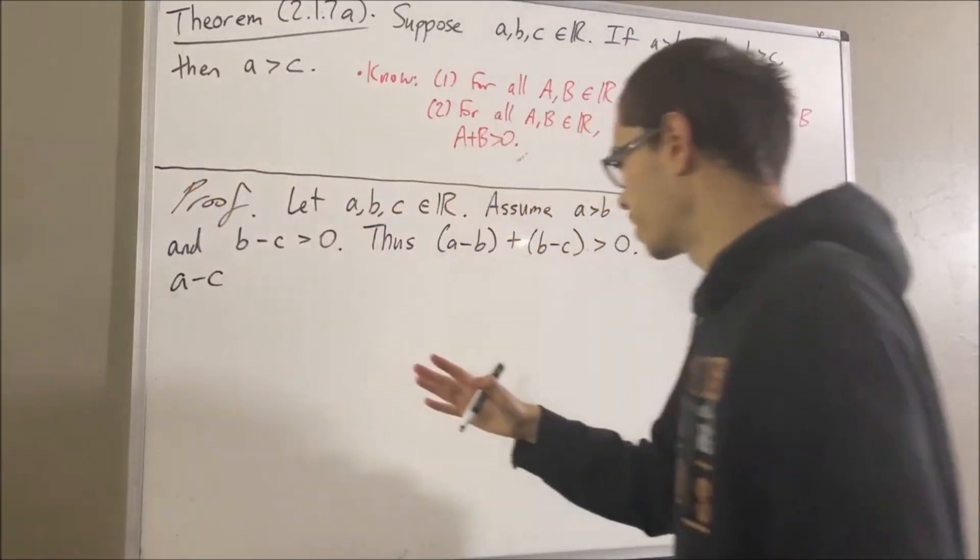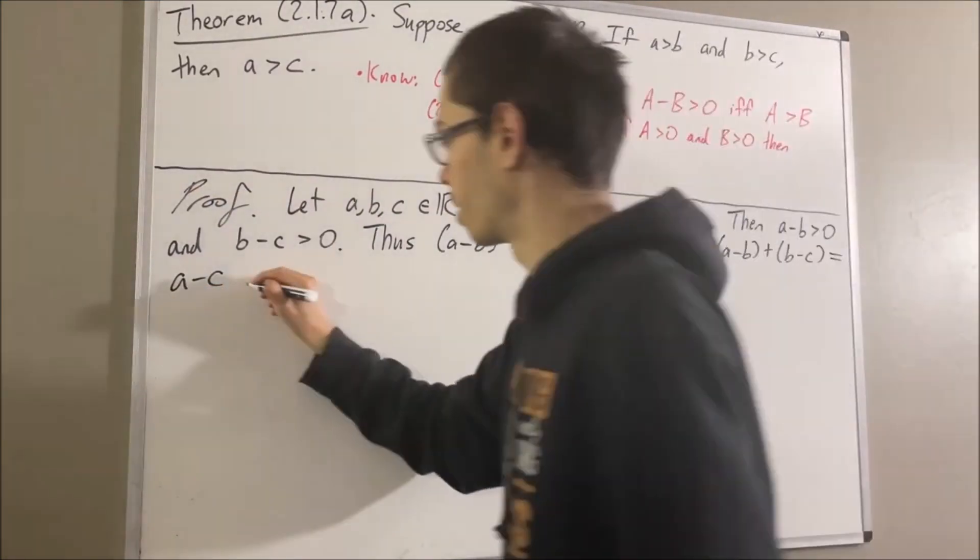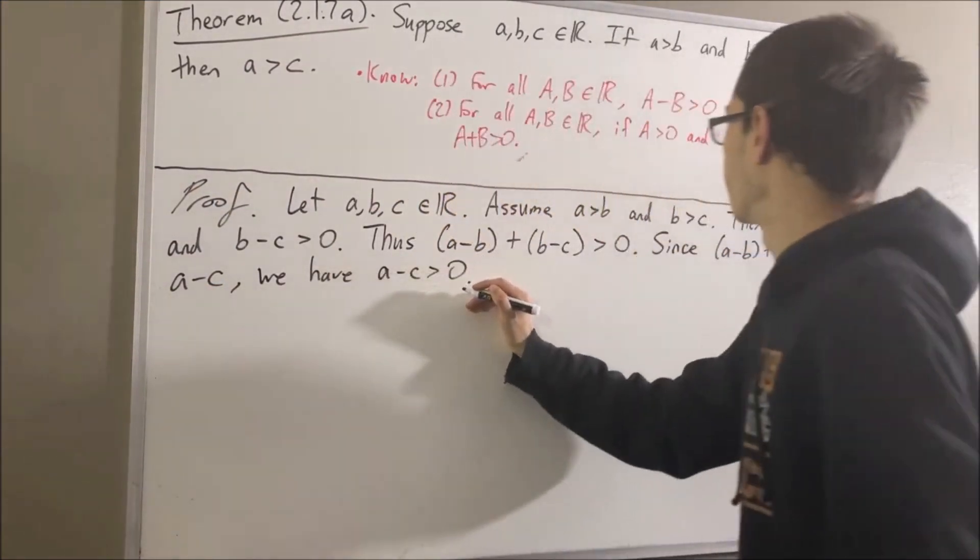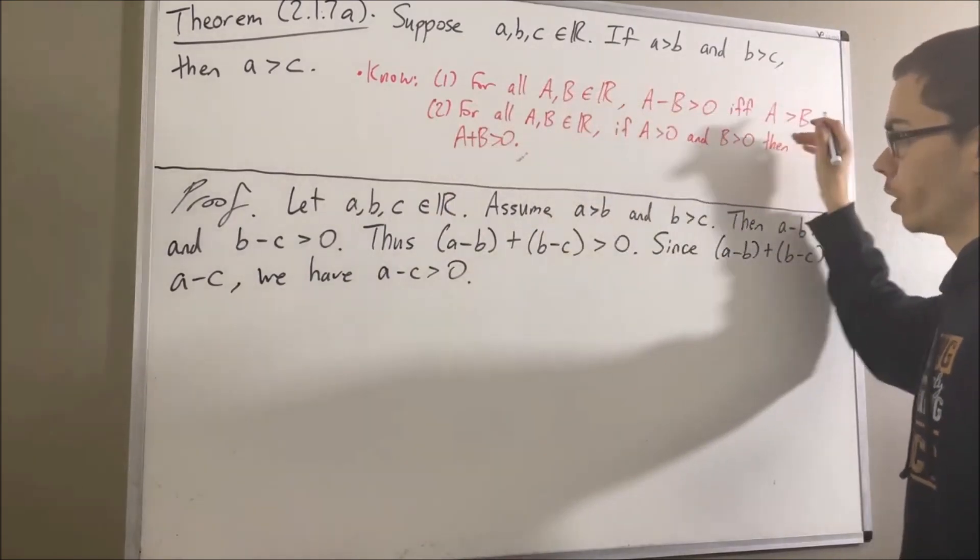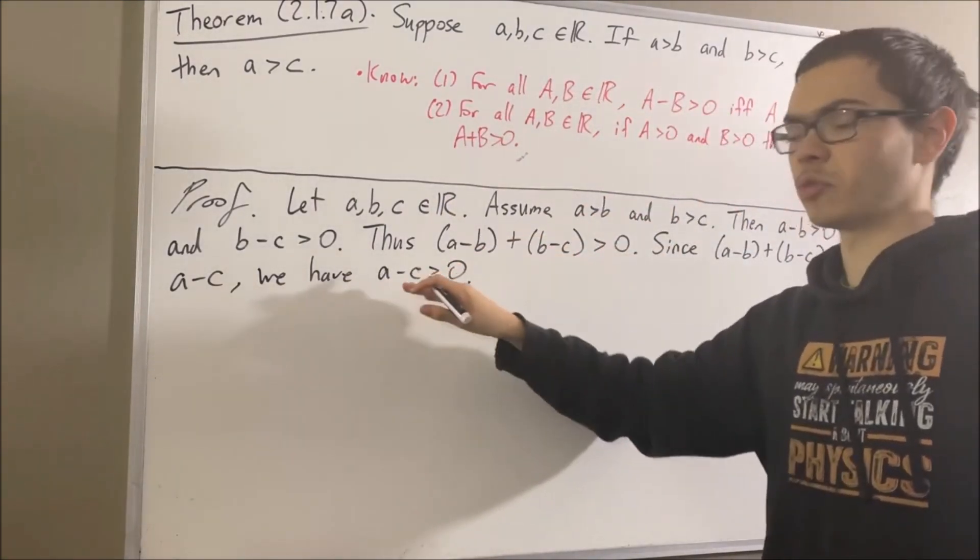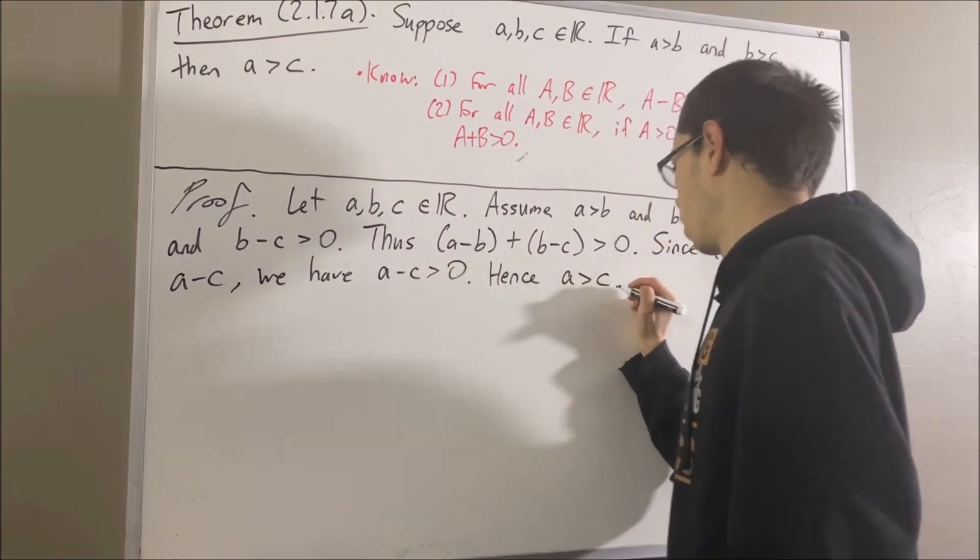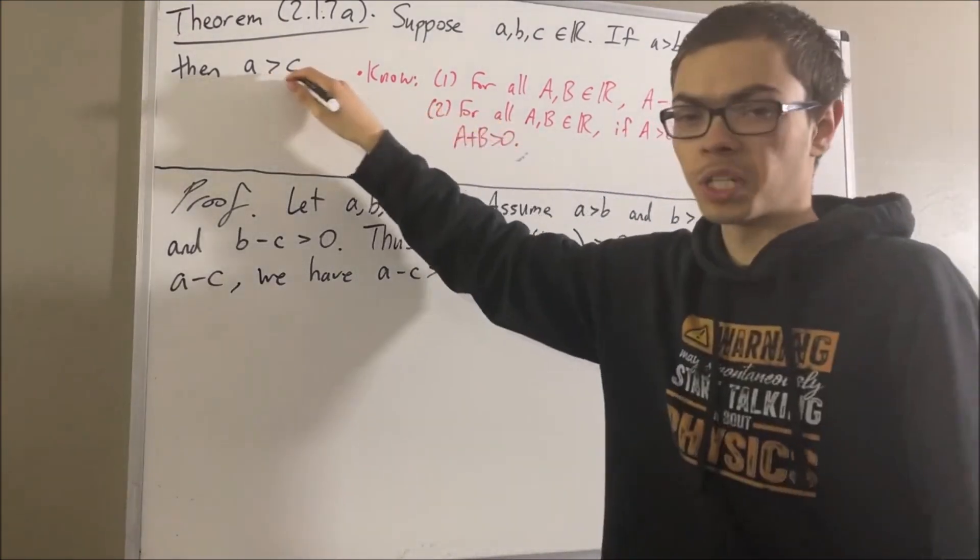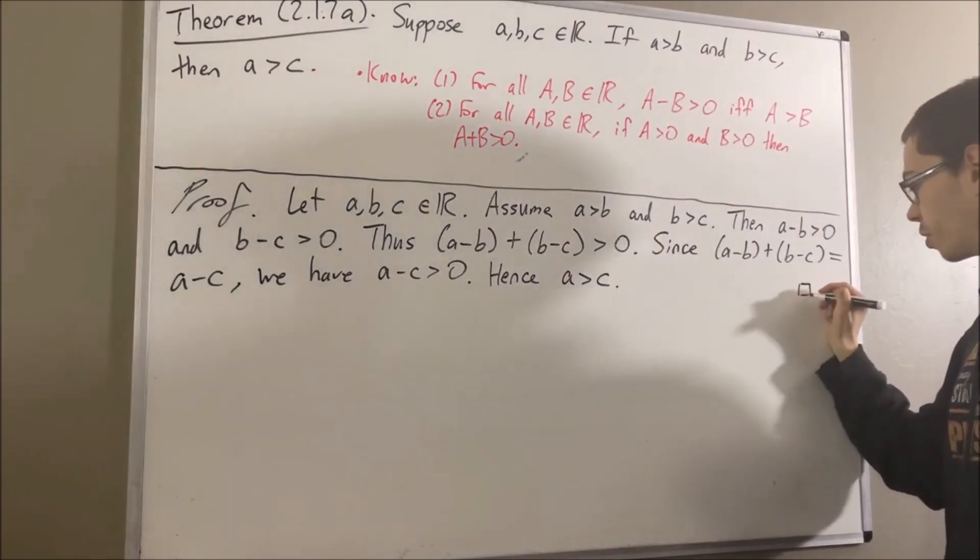So what this means is a minus c is greater than zero. But then going back to fact number one, we know that a minus c is greater than zero is equivalent to saying that a is greater than c. And that's exactly what we wanted to prove. So this completes the proof.